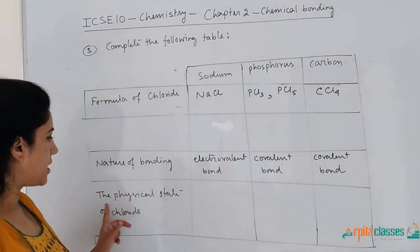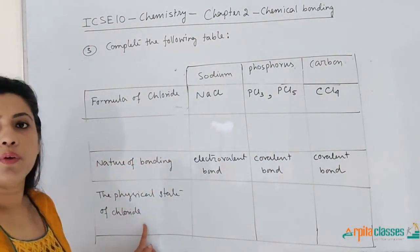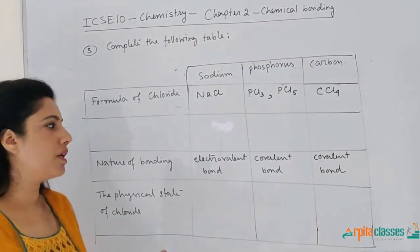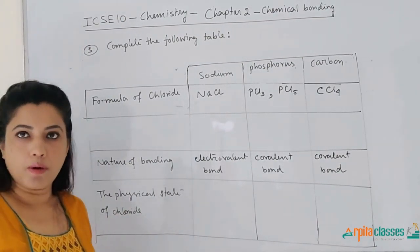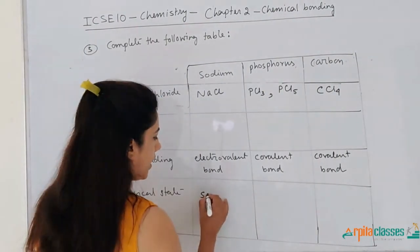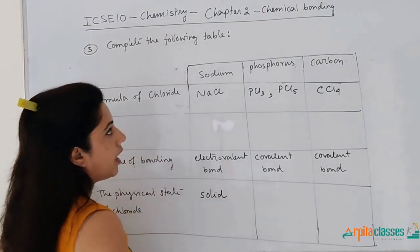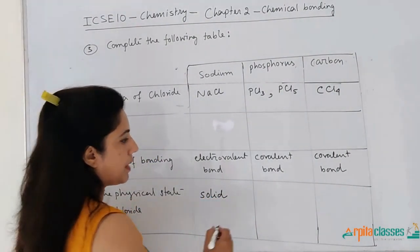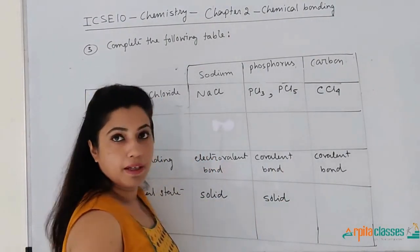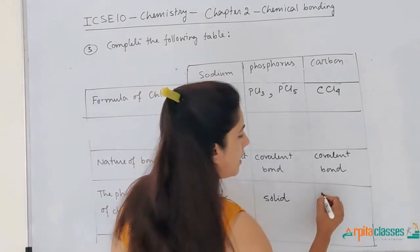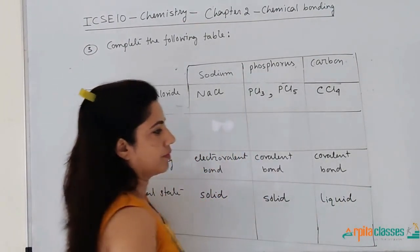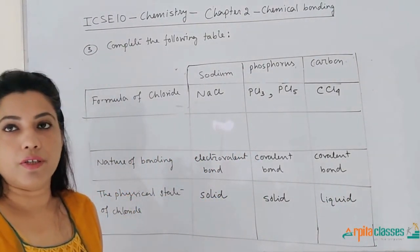For the physical state of these chlorides: NaCl is a solid, phosphorus pentachloride is also a solid, and carbon tetrachloride is a liquid. So we are done with the third question.